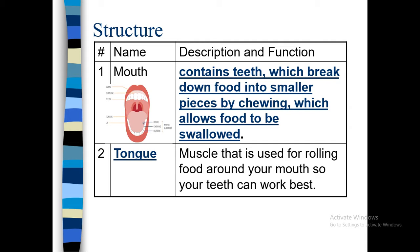Number two is the tongue. It is a muscle that is used for rolling food around your mouth so your teeth can work best. It also helps the food to move towards the esophagus.